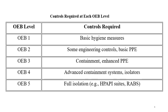OEB3 requires enhanced personal protective equipment and a containment system. OEB4 requires an advanced containment system to control dust exposure at very low levels, with every equipment having isolators along with PPEs. OEB5 requires full isolation and the use of pressure suits by employees working in these areas.